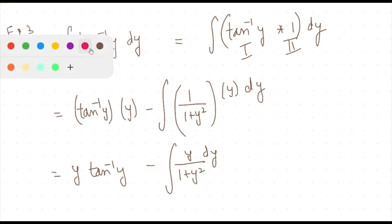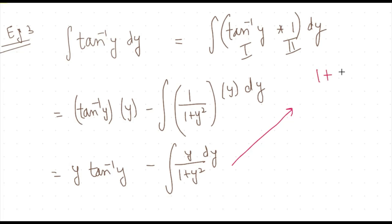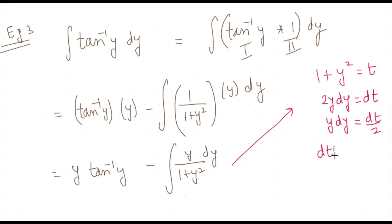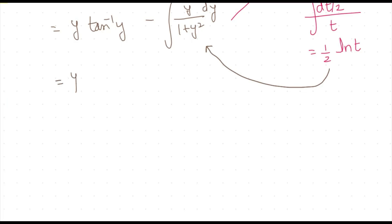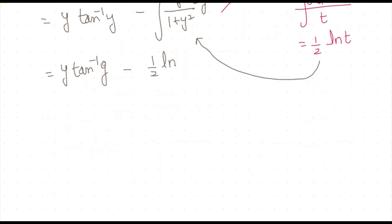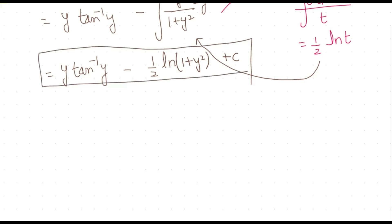Now the challenge is to integrate y/(1 + y²). We substitute 1 + y² = t, so 2y dy = dt, meaning y dy = dt/2. The integral becomes (1/2)·∫dt/t = (1/2)·ln|t|. Substituting back, we get (1/2)·ln(1 + y²). So the final answer is y·tan⁻¹(y) − (1/2)·ln(1 + y²) + C.